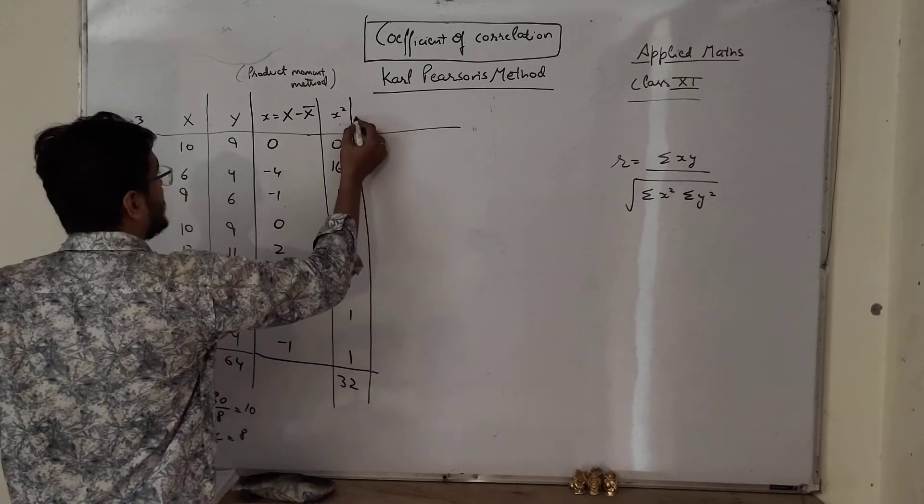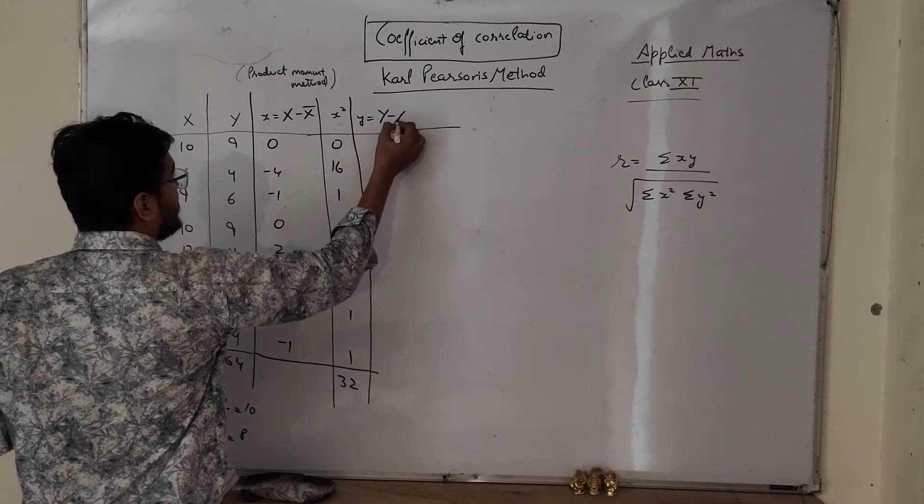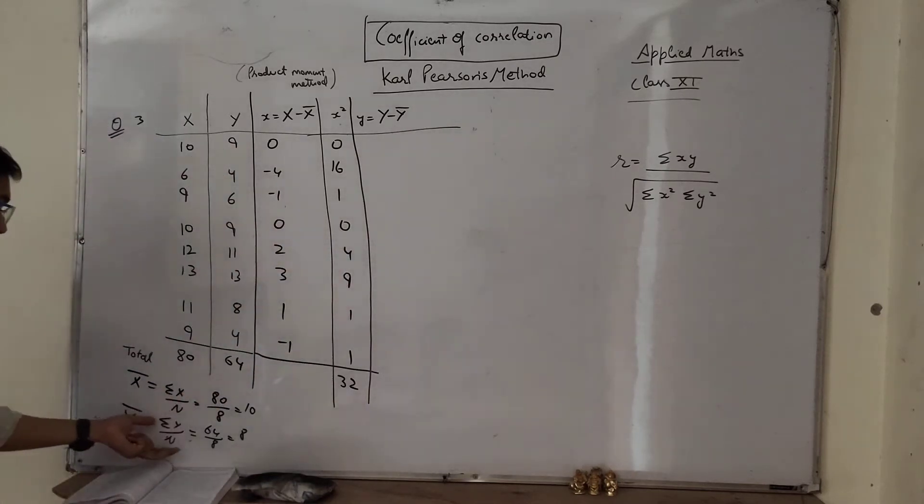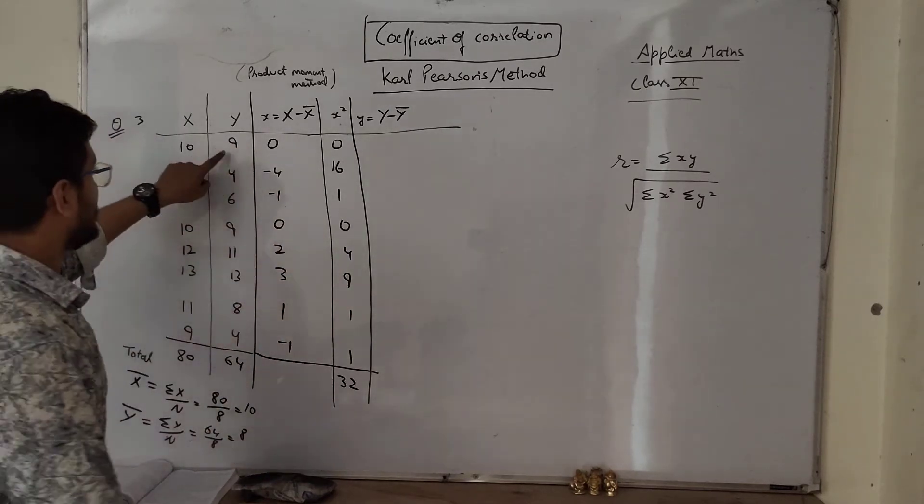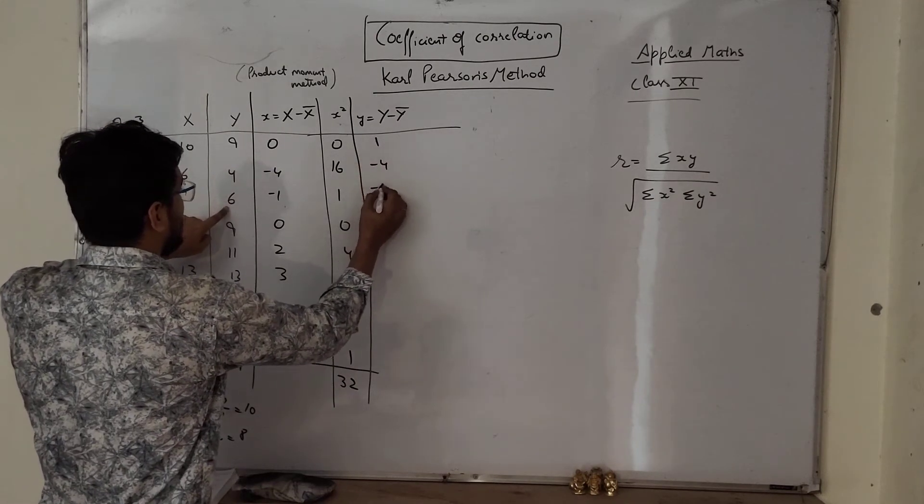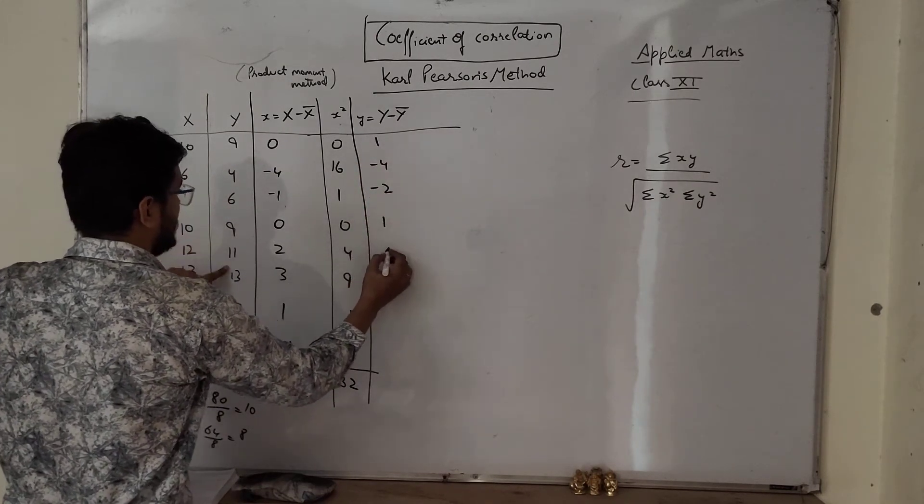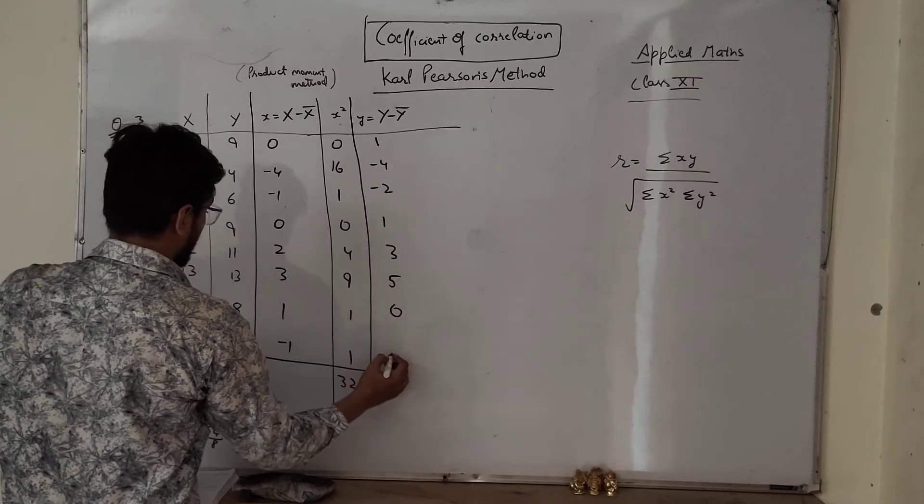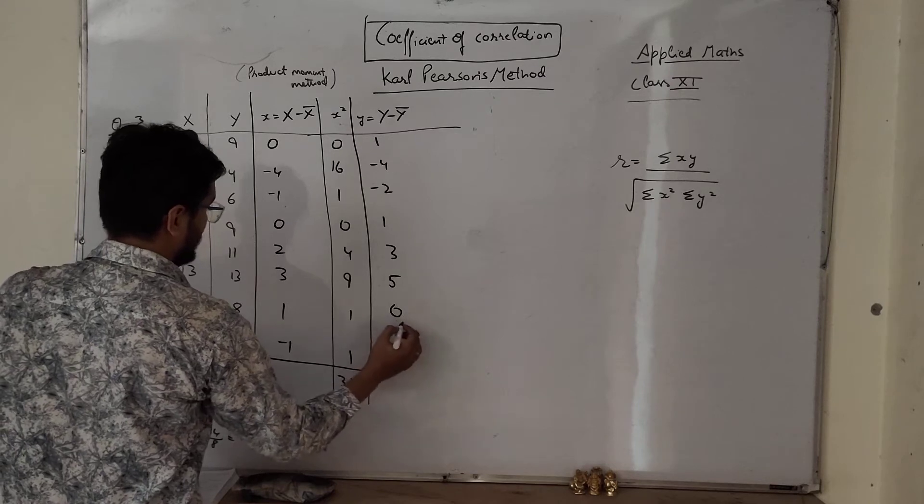So next column is small y, which is capital Y minus y bar, simple. So y bar we have already determined, it is 8. So 9 minus 8 is 1, 4 minus 8 is minus 4, minus 2, 1, 3, 5, 0, and 4 minus 8 is minus 4.